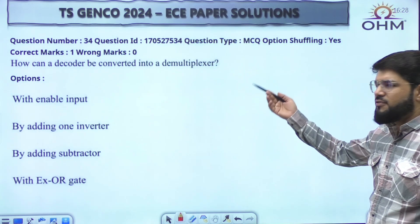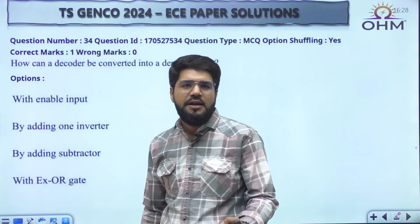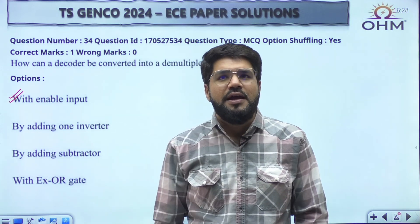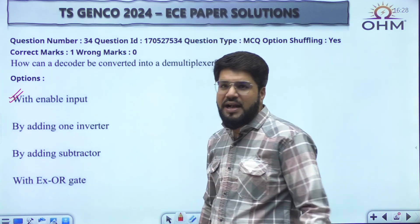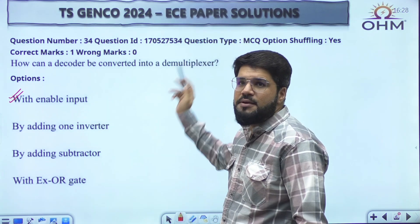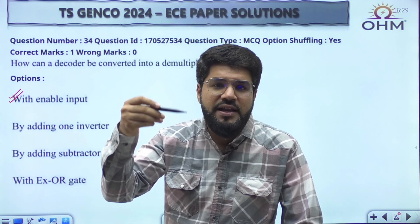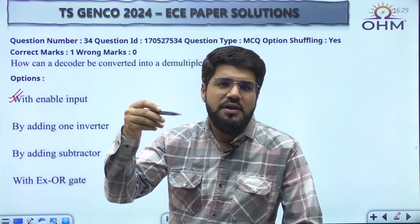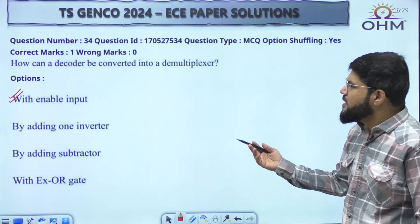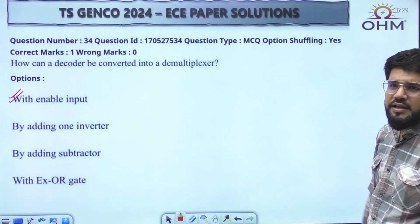This question is about how a decoder can be converted to a demultiplexer. A decoder with an enable input is itself a demultiplexer — you don't need to design a demultiplexer separately. The enable input acts as the data input to be demultiplexed, and the actual inputs of the decoder (A and B for a 2×4 decoder) act as the select lines of the demultiplexer. Decoder with enable input is a demultiplexer — a direct theoretical question.